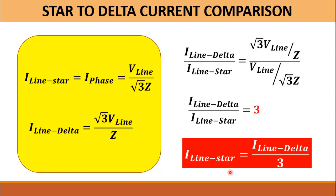As you already know, the starting current of the motor is normally five to eight times the rated current of the motor. Therefore, in order to reduce this starting current, we start the motor in the star configuration and afterward we convert it into the delta configuration.